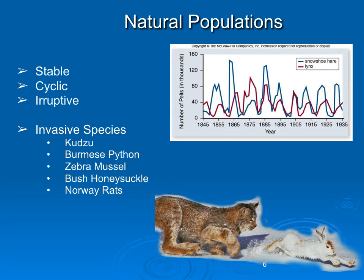Our book also talks about organisms that are opportunistic and invade new habitats. When they invade new habitats, they escape limits on their population growth, so their populations become very high and can become a real problem. The book mentions a vine called kudzu that has been spreading in the southern United States for a hundred years and can just take over regions. Also animals like the Burmese python.